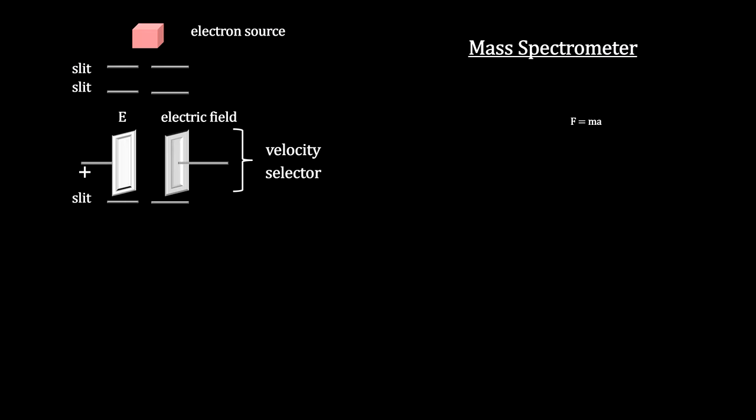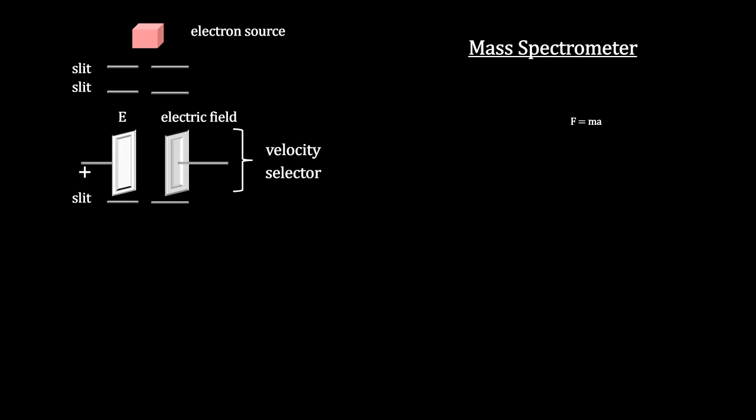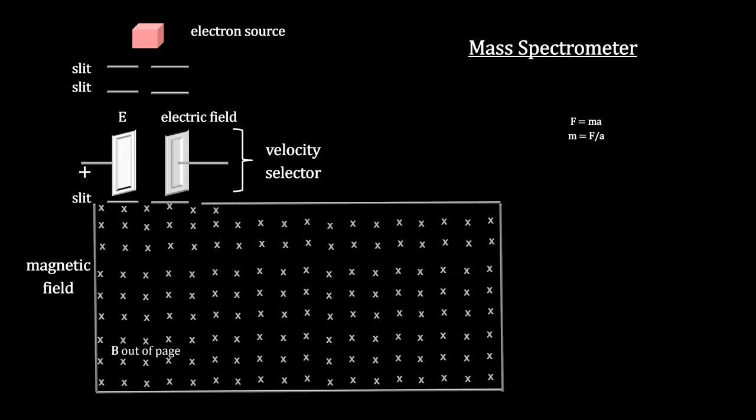Here's how it works. From Newton, we know that force equals mass times acceleration, so mass equals force divided by acceleration.